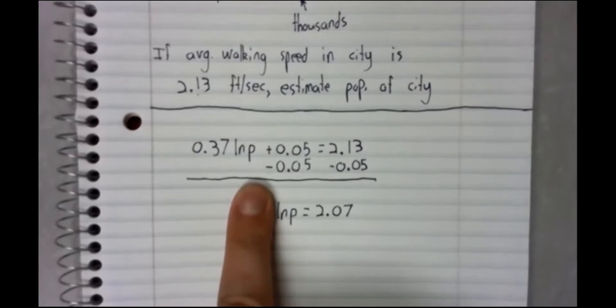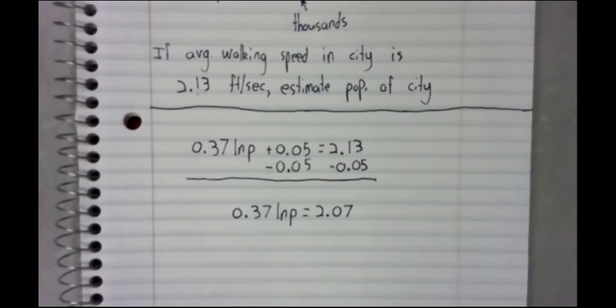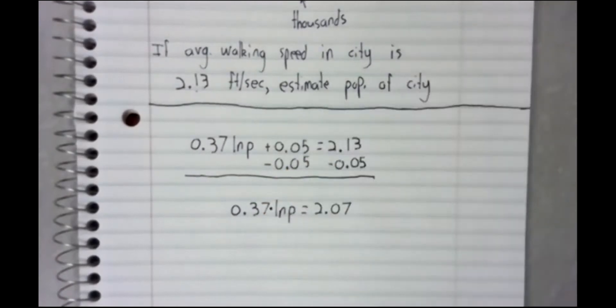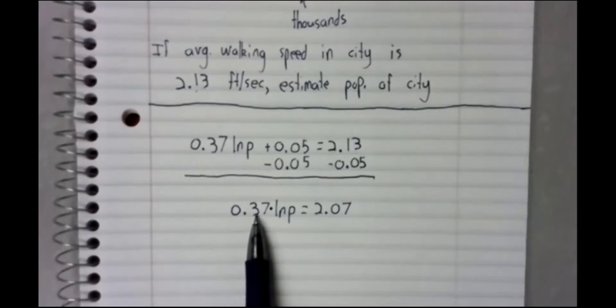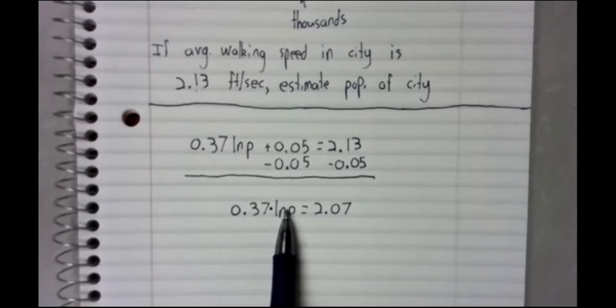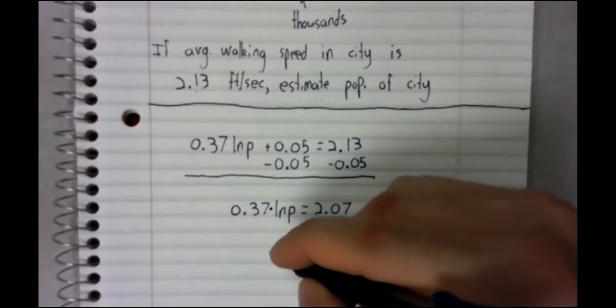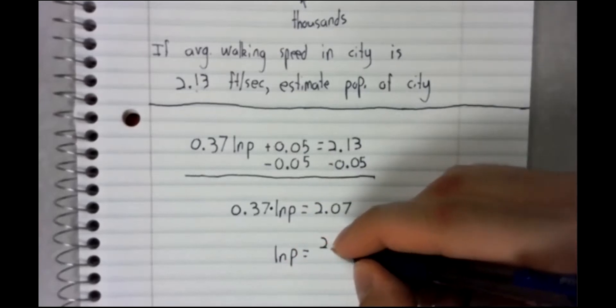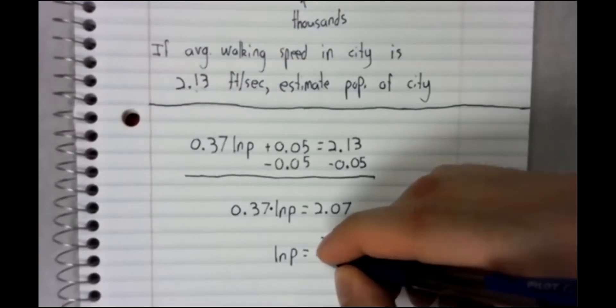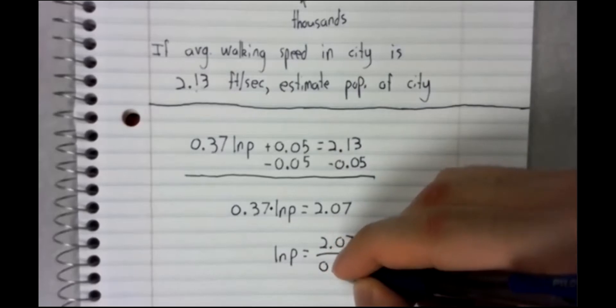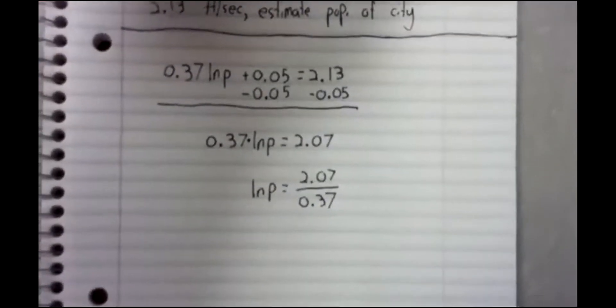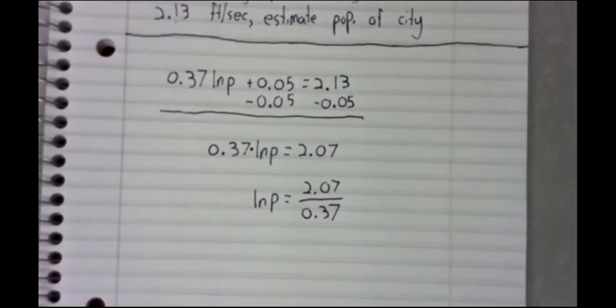We need that logarithm by itself, that 0.37 can't be there. This is multiplication, 0.37 times the natural logarithm. Multiplication is undone by division.